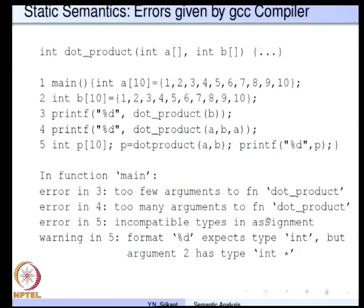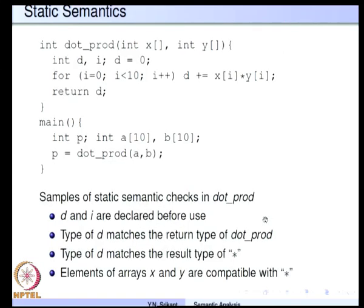These are examples of errors in the main program. Continuing the same program in the function dot product, there are many semantic checks possible. D is declared and assigned; i is declared and then used here — the property of declaration before use is satisfied. The same is true for x and y because they appear as parameters, which is in some sense a declaration of these two variables.